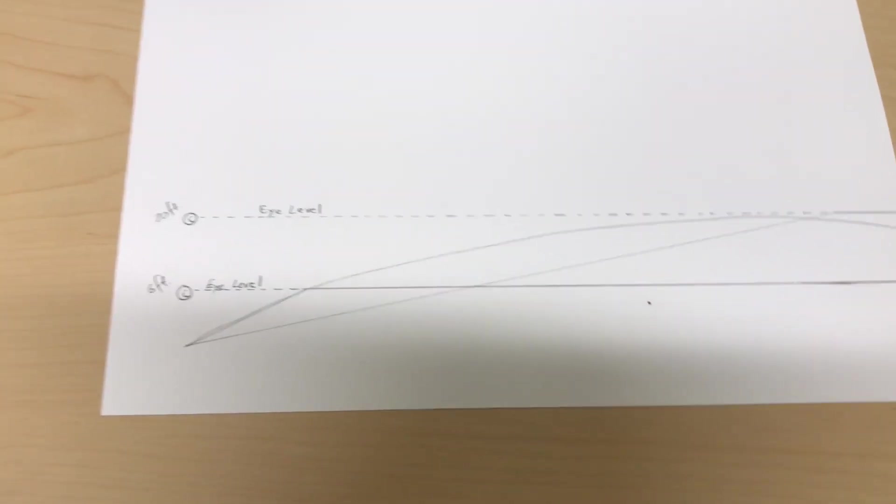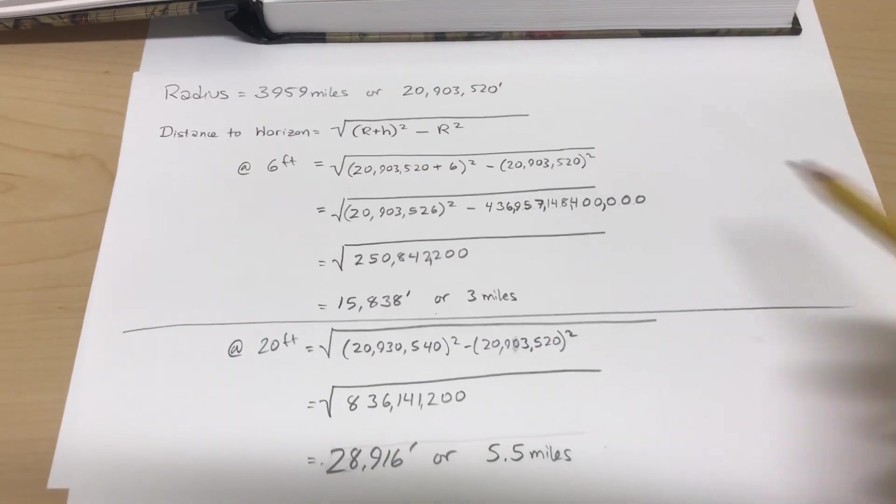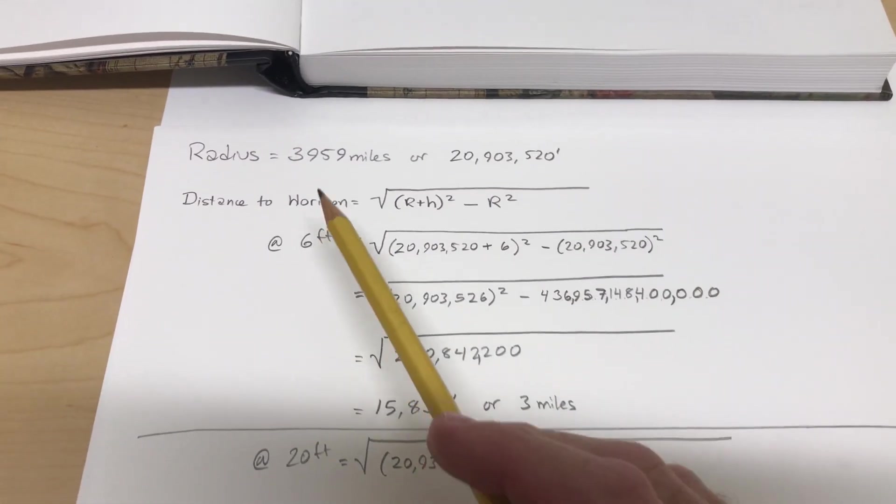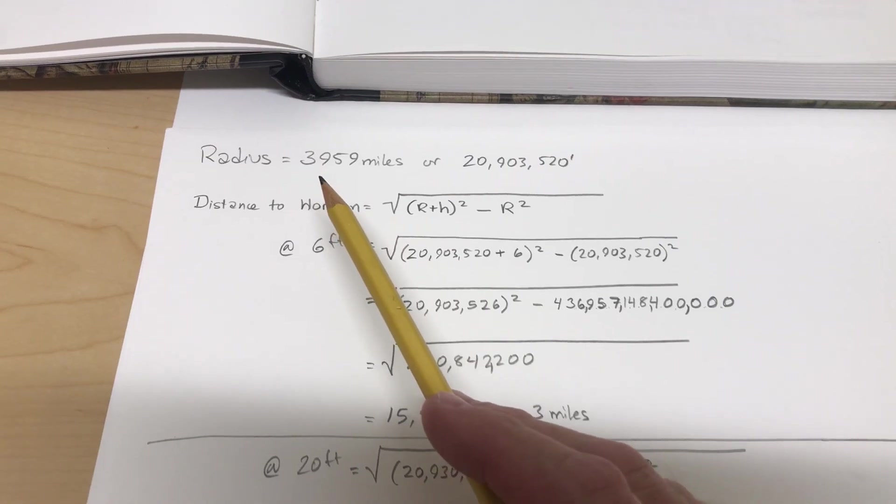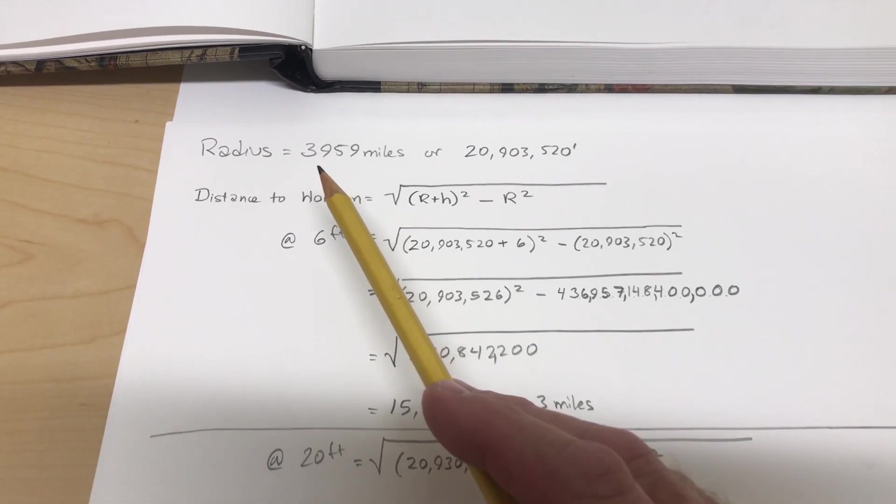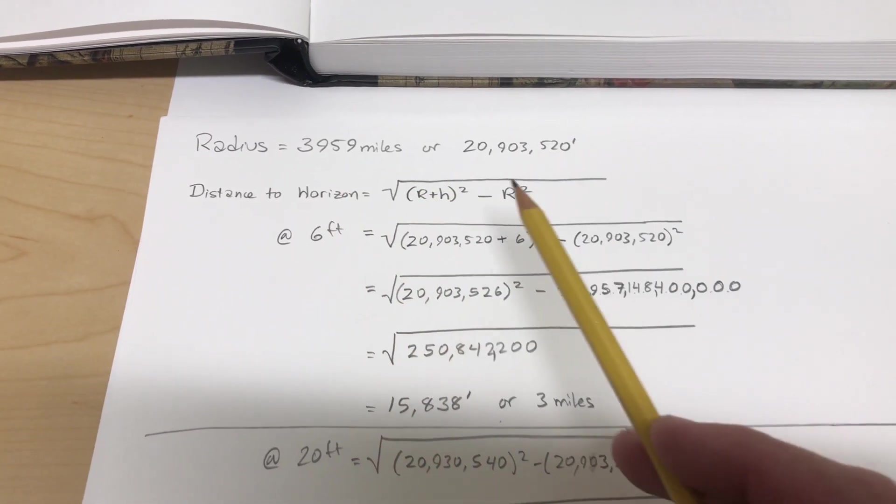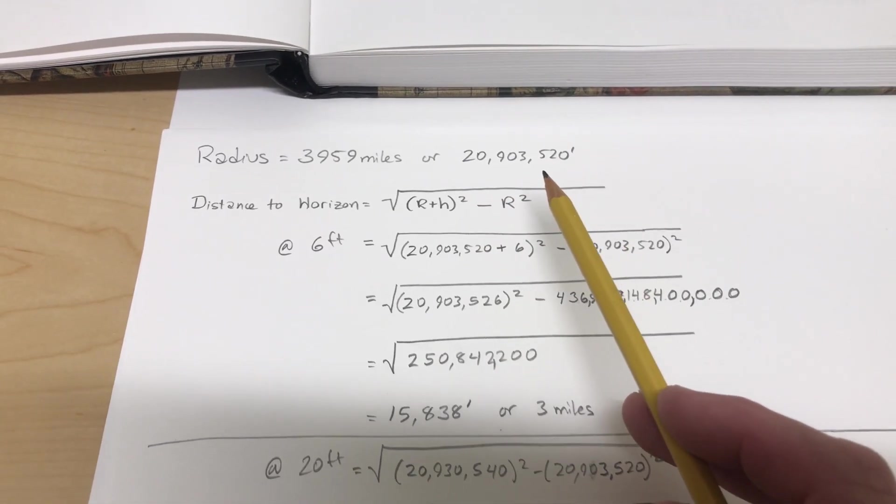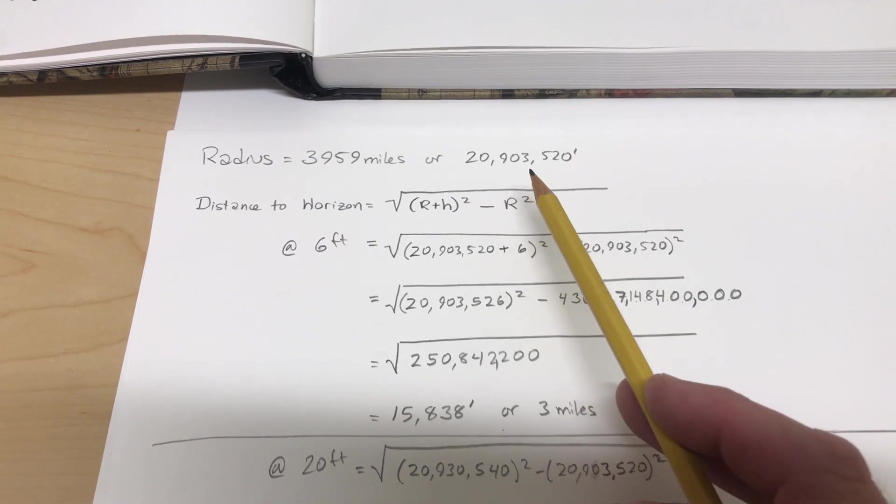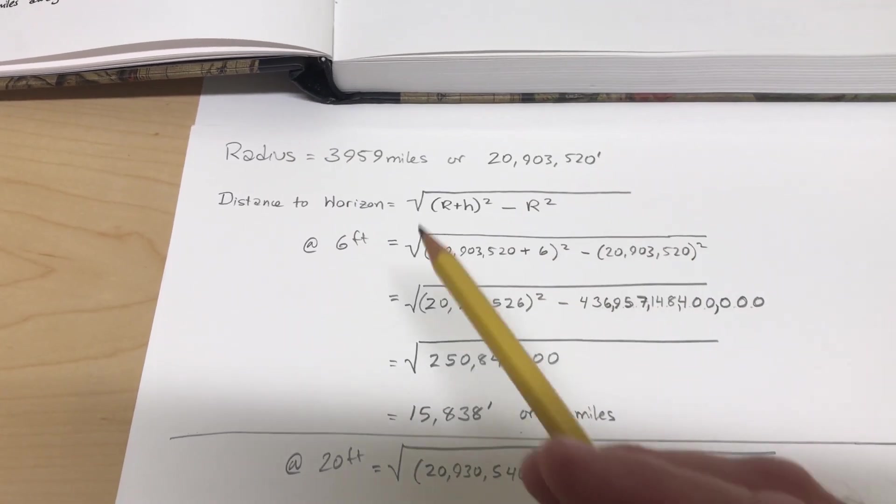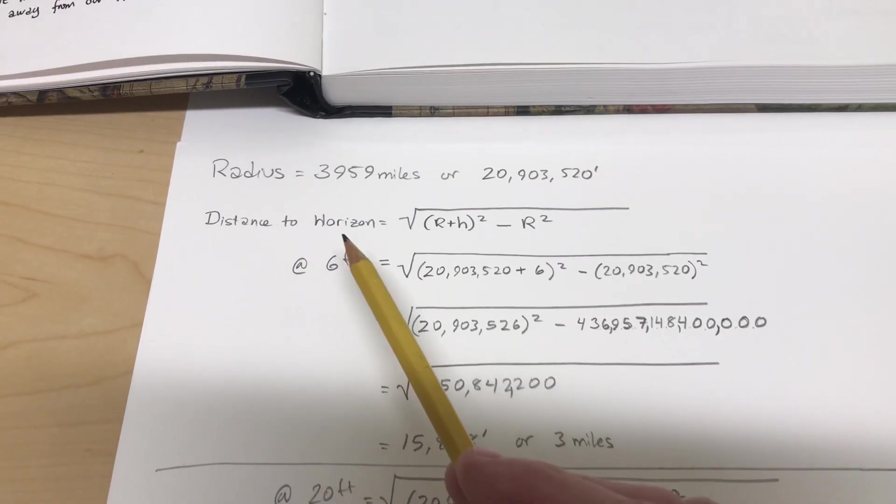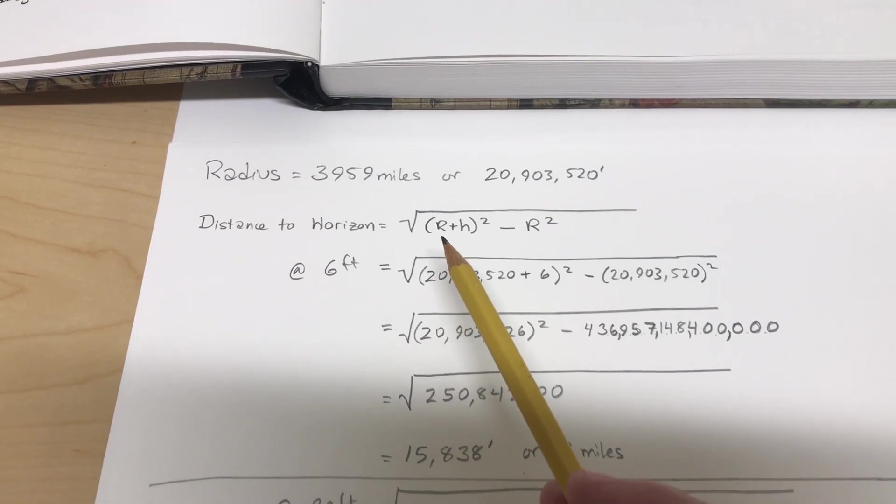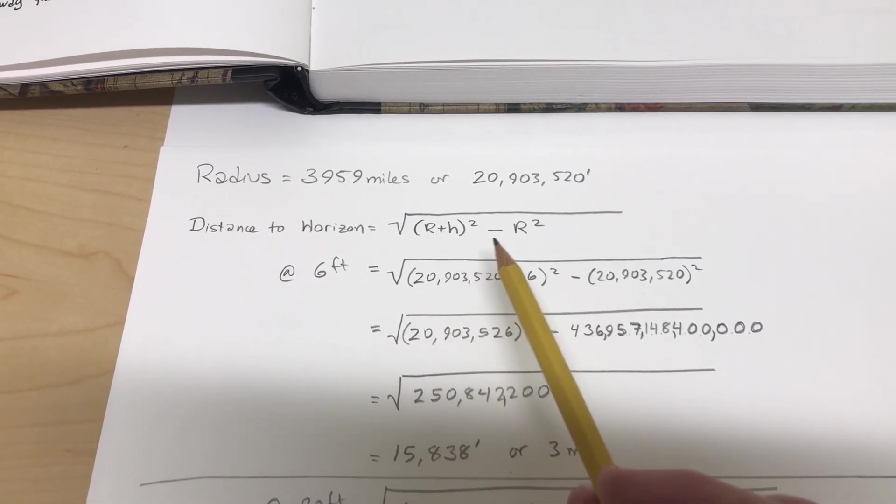So let's take this particular flat earther's numbers. The radius, the average radius of the Earth, is 3,959 miles or 20,903,520 feet. My apologies to my European friends for the American use of commas, but that's how we do it. Okay, so our distance to the horizon equals the radius plus our height squared minus r squared.